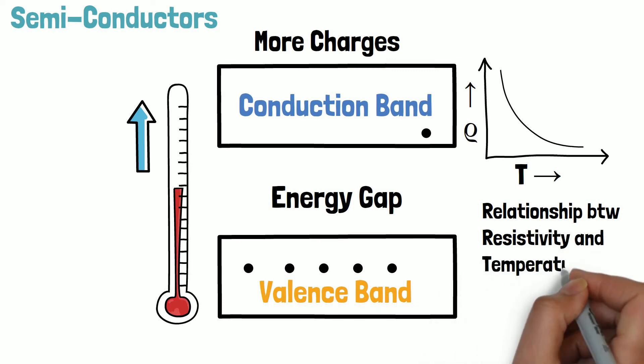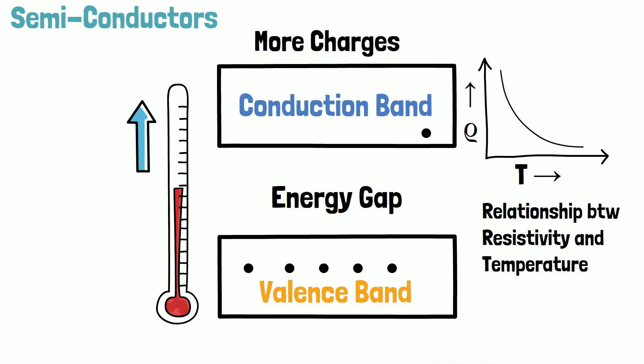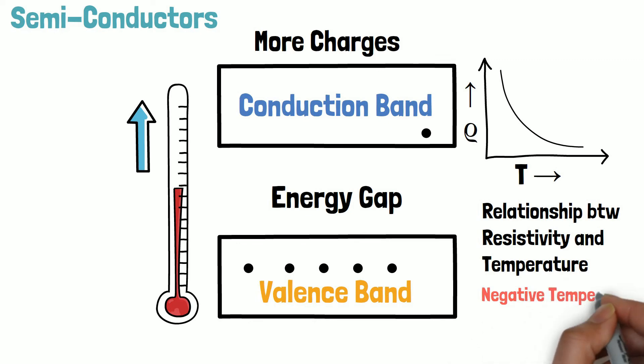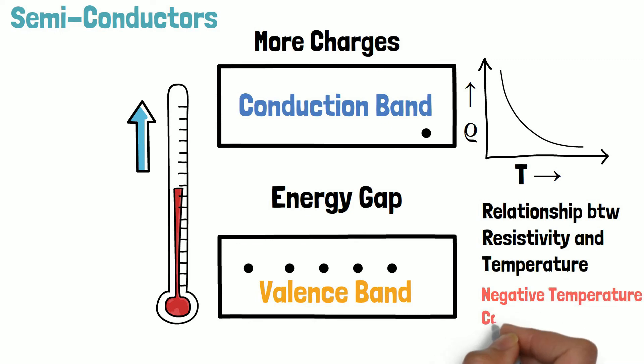The graph shows the relationship between resistivity and temperature in a semiconductor. Semiconductors have a negative temperature coefficient of resistance.